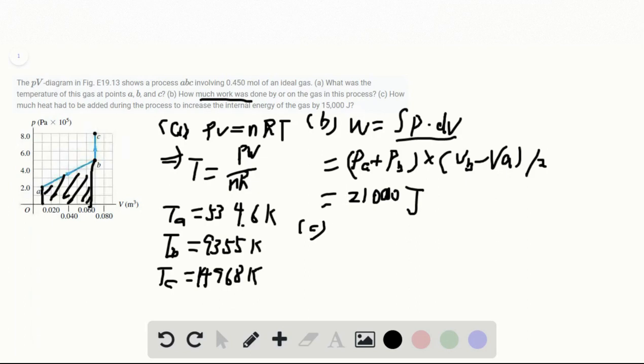Part C is, we want to find out how much heat we need if the internal energy change of the gas is 15,000. So according to the first thermal law, Q is equal to W plus delta U. So W is this one, and delta U is this one. So just add these two numbers together. That is 36,000 joules.